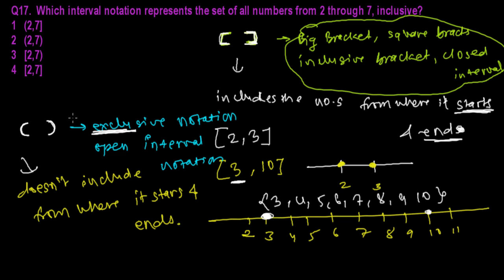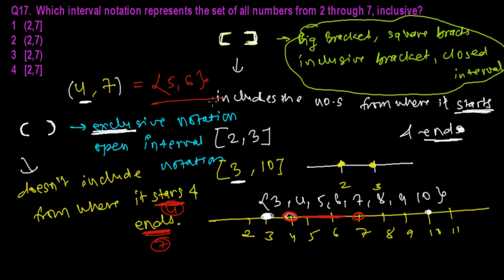If I'm writing four to seven with an open bracket, this is the starting point — four — and I'm not going to take this four. It's exclusive, so I exclude it. At seven, again it does not include the endpoint. So we take everything between four and seven, which is just five and six. That's the open interval notation, also called exclusive notation.